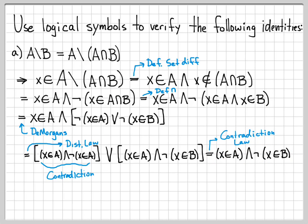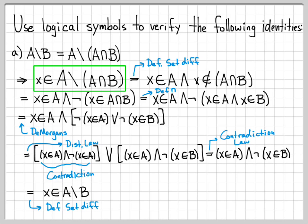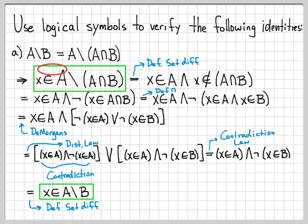So I've been able to manipulate the original statement — X in A difference (A intersect B) — into this simplified form, with just a few more steps left. What does it mean for X to be in A and NOT X in B? By the definition of set difference, that means X is in A difference B. Starting from X in A difference (A intersect B) and performing these steps backwards, we could get back to the same result. So whether we start with either side, we can always reach the other equivalent logical expression — establishing that these two sets are indeed equal.